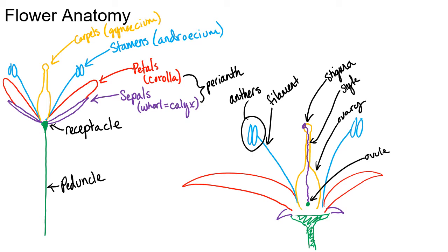In the ovary is where the egg is, contained within the ovule, so fertilization happens when the pollen tube grows all the way down the style. Sometimes the style is quite short; with corn, the corn silk is very long. The sperm are transported down that tube — they don't have flagella — and end up at the ovule. That is our floral anatomy.